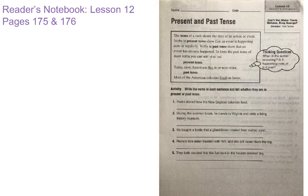The tense of a verb shows the time of an action or an event. Verbs in present tense show that an event is happening now or regularly. Verbs in past tense show that an event has already happened. To form the past tense of most verbs, you can add D or ED to the end of the word.